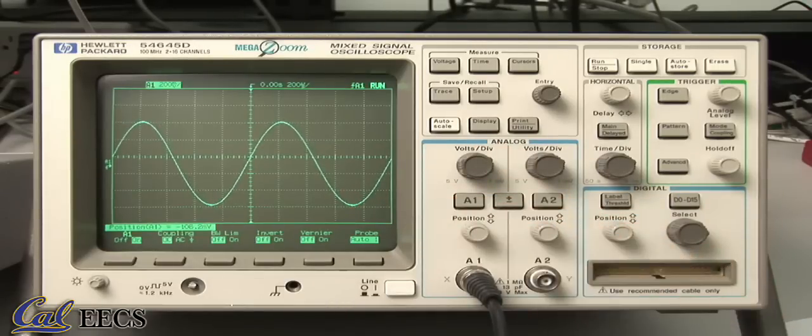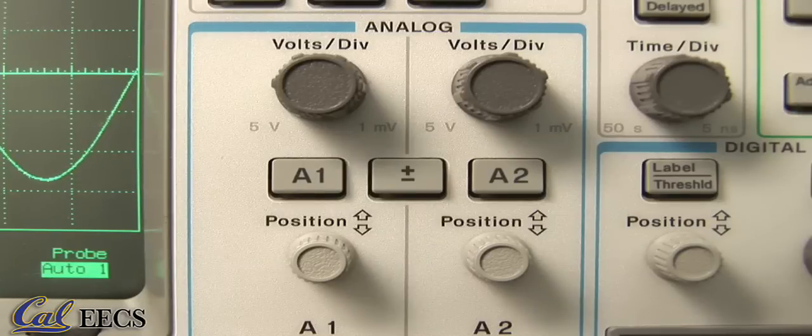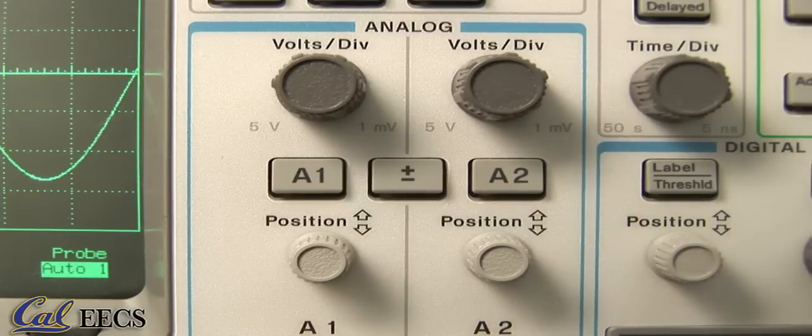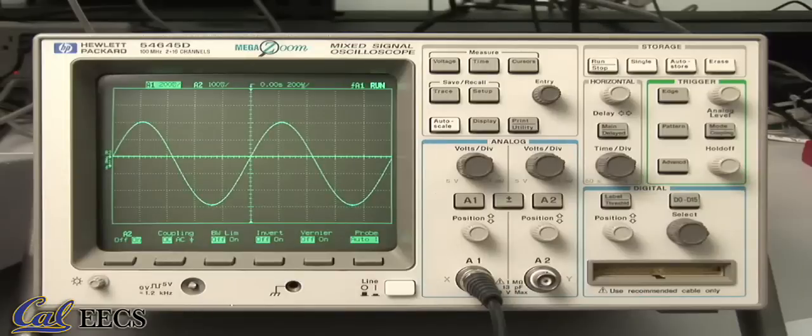You can also display different features of the waveform on each channel by pressing either A1 or A2. For instance, the signal you see on the screen is the signal voltage, DC value and all.